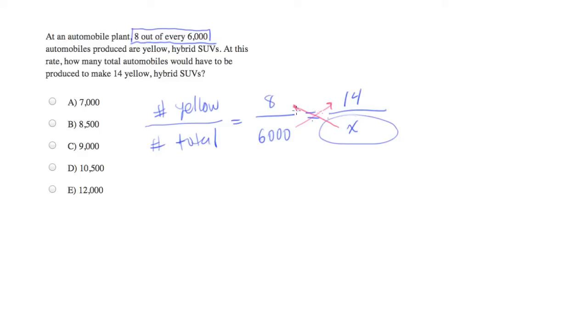So let's do that. We'll get 8x equals 14 times 6,000. You can divide both sides by 8, and we'll end up with x equals 14 times 6,000 over 8.